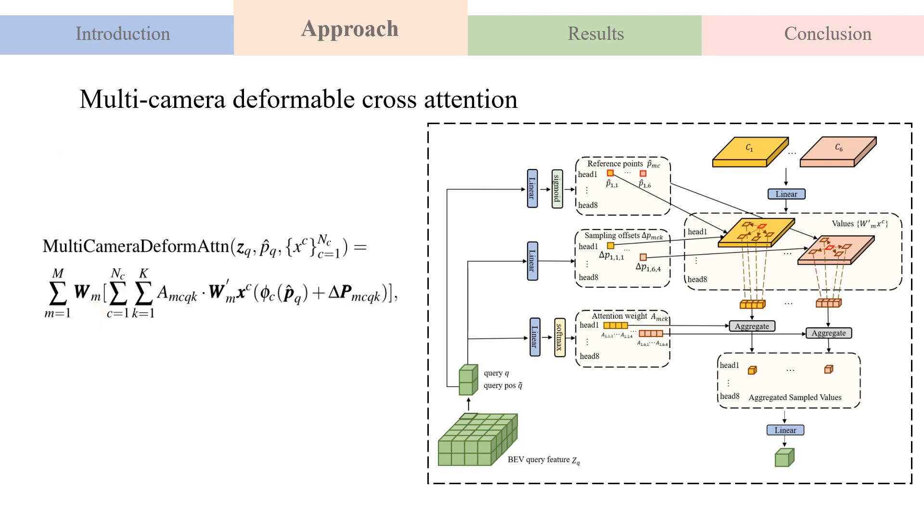Specifically, for each BEV query, we apply a learnable linear projection layer on its position embedding to obtain the 2D coordinates of reference points, and then use the sigmoid function to normalize these coordinates. Two learnable linear projection layers are used to predict the offset of the sampling points relative to the reference point and the attention weight of these sampling points. Finally, the camera features at the sampled positions are aggregated by the attention weights to generate a new query.